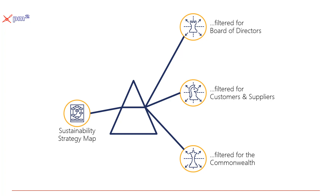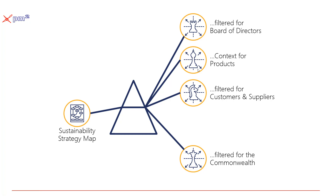In addition to these simple filters, we can also change the context. For example, we might need to show a product view. Products might have a different set of strategic priorities — some helping us develop new products, others entering new markets, and others acting as cash cows to continue cash flow and profitable performance.